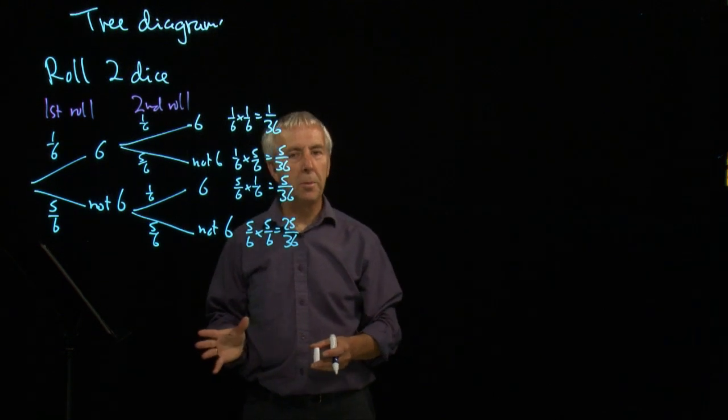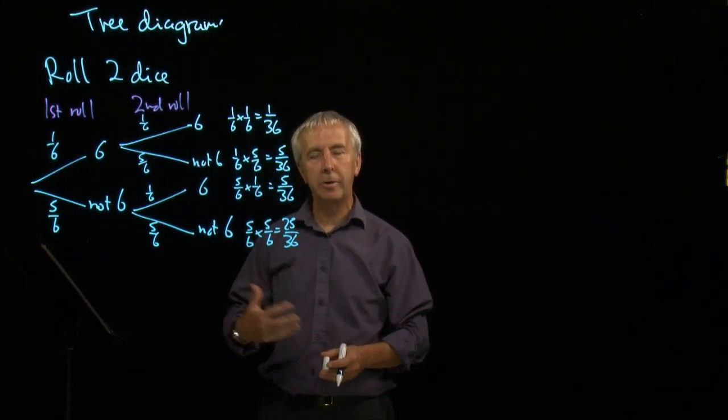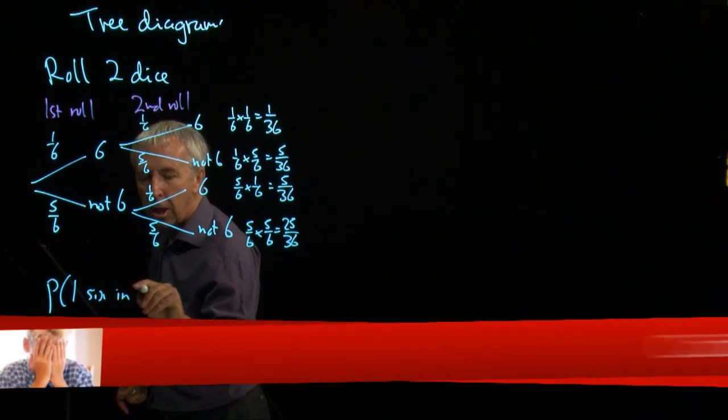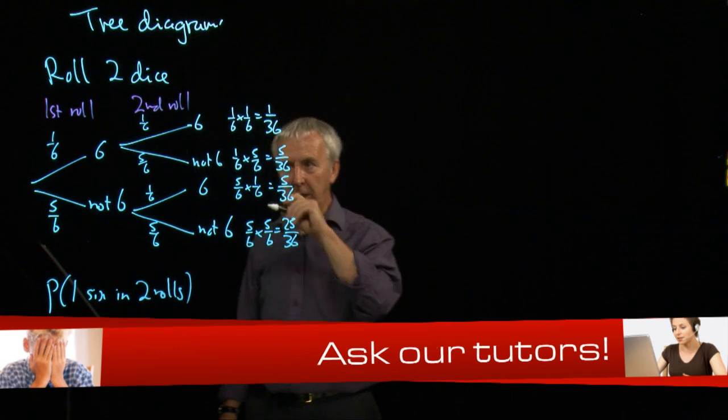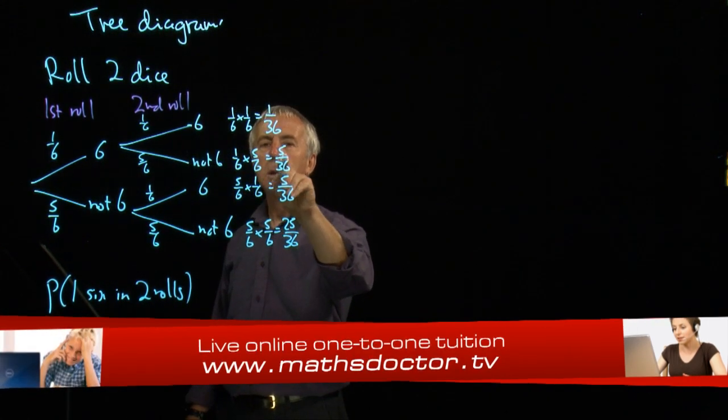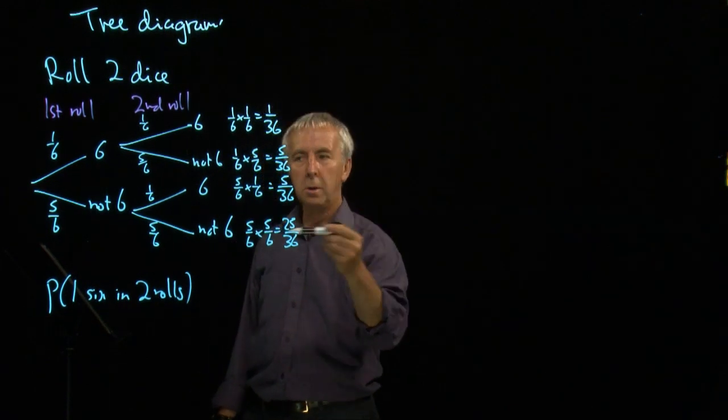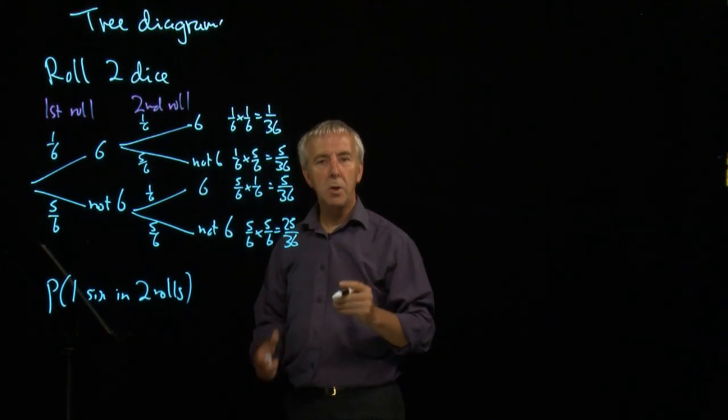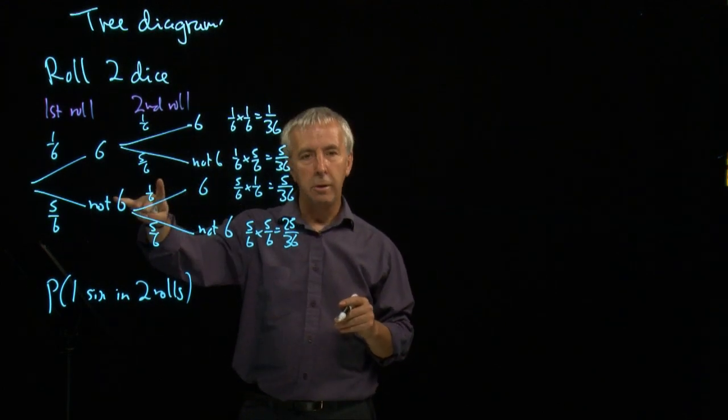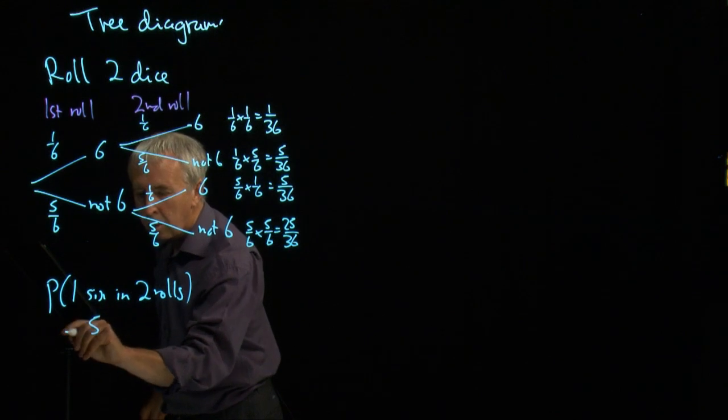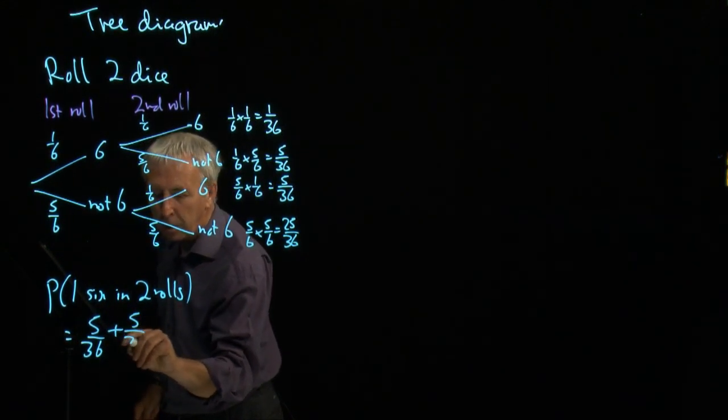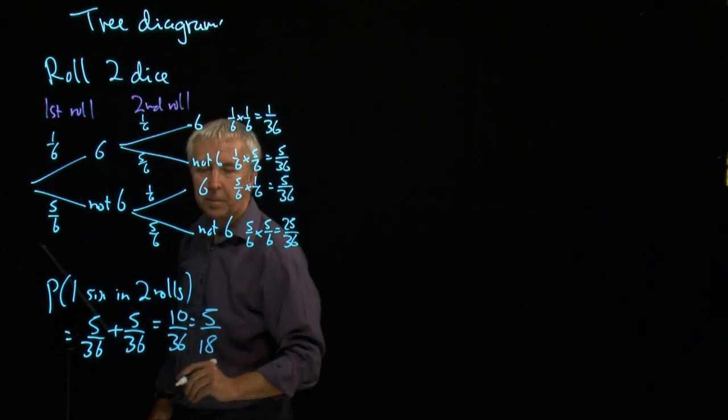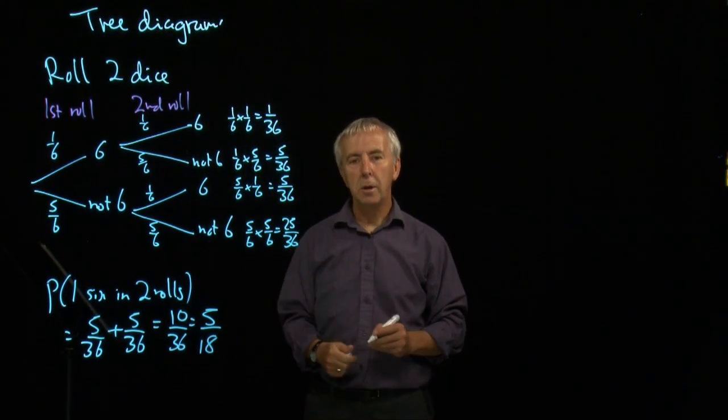Now, we might not be bothered which order things come in. So suppose we simply wanted the probability of one six in two rolls of the dice. How can I get one six? Well, I could have got it here, and the chance was five-thirty-sixths, or I could have got it on this alternative sequence where I got it as a second throw. Again, that was five-thirty-sixths. And because it's or, because these are alternative scenarios, we add the probabilities. So we get five-thirty-sixths plus five-thirty-sixths, which is ten-thirty-sixths, or five-eighteenths. So we multiply along the branches, we add the alternative branches.